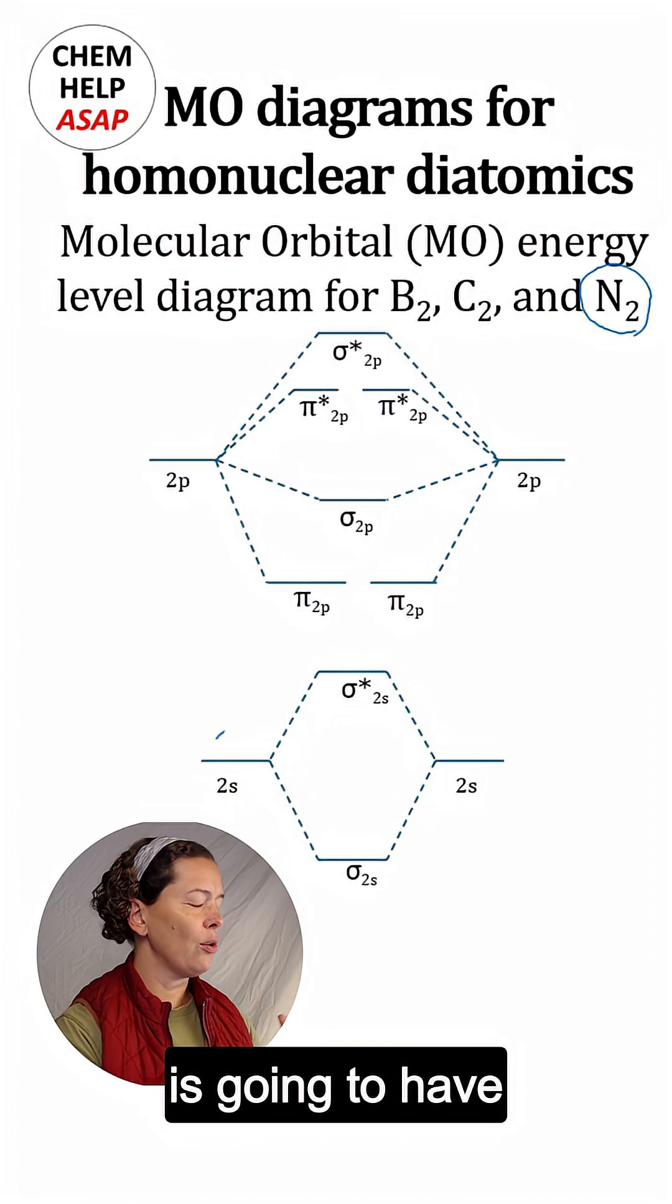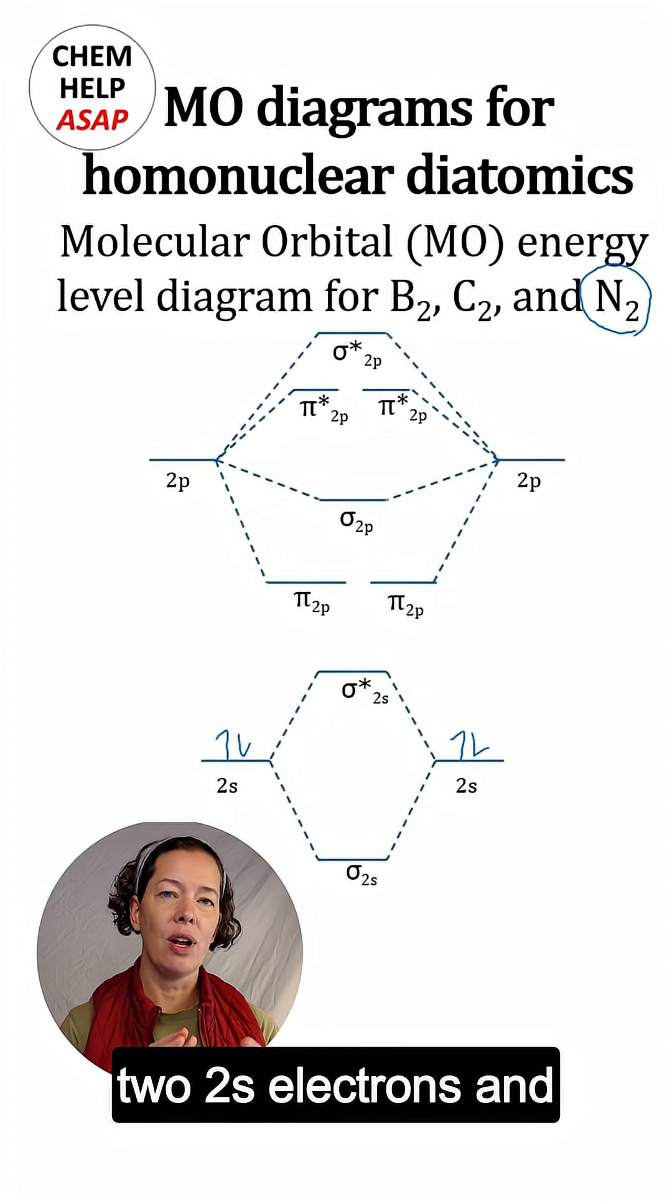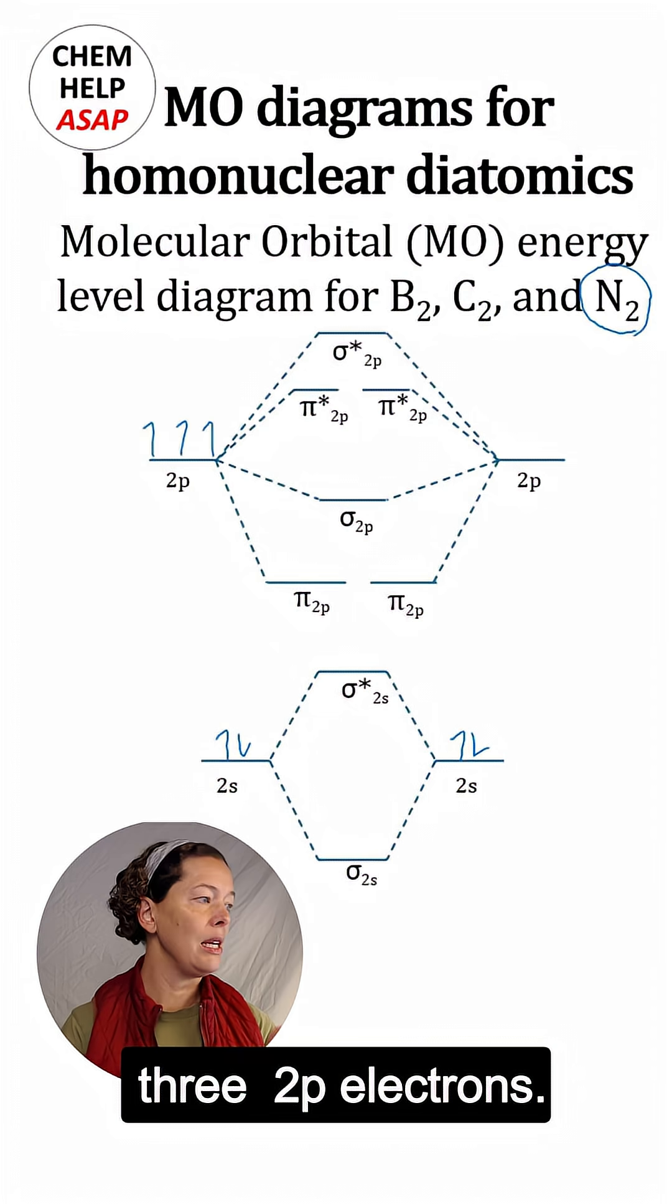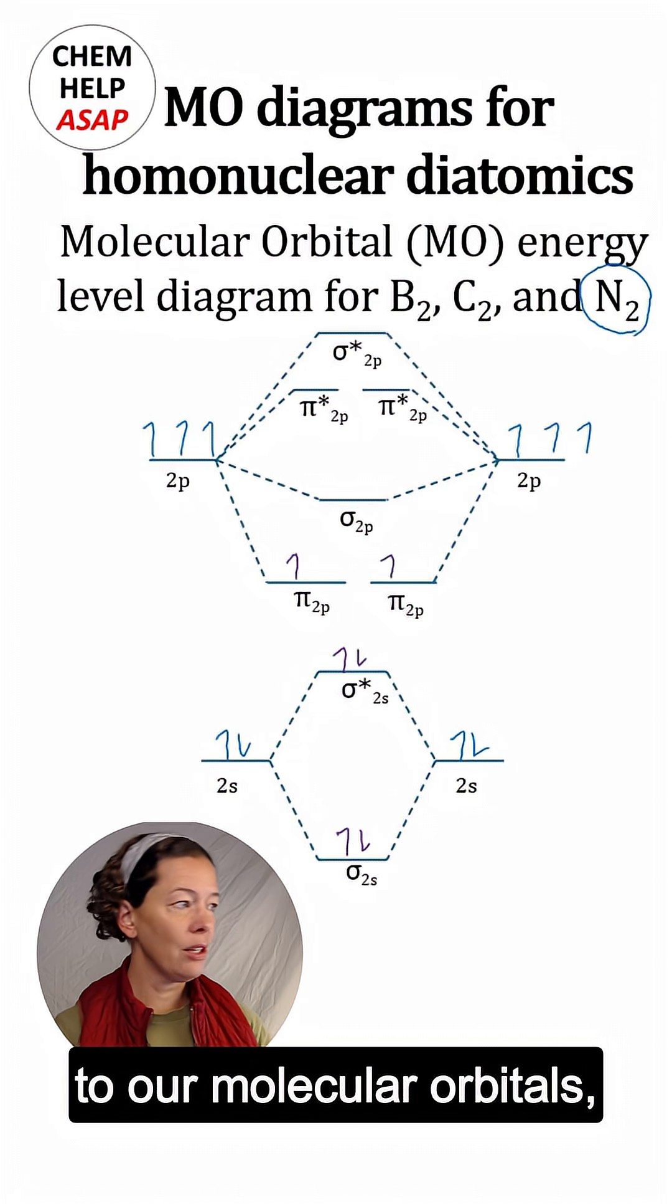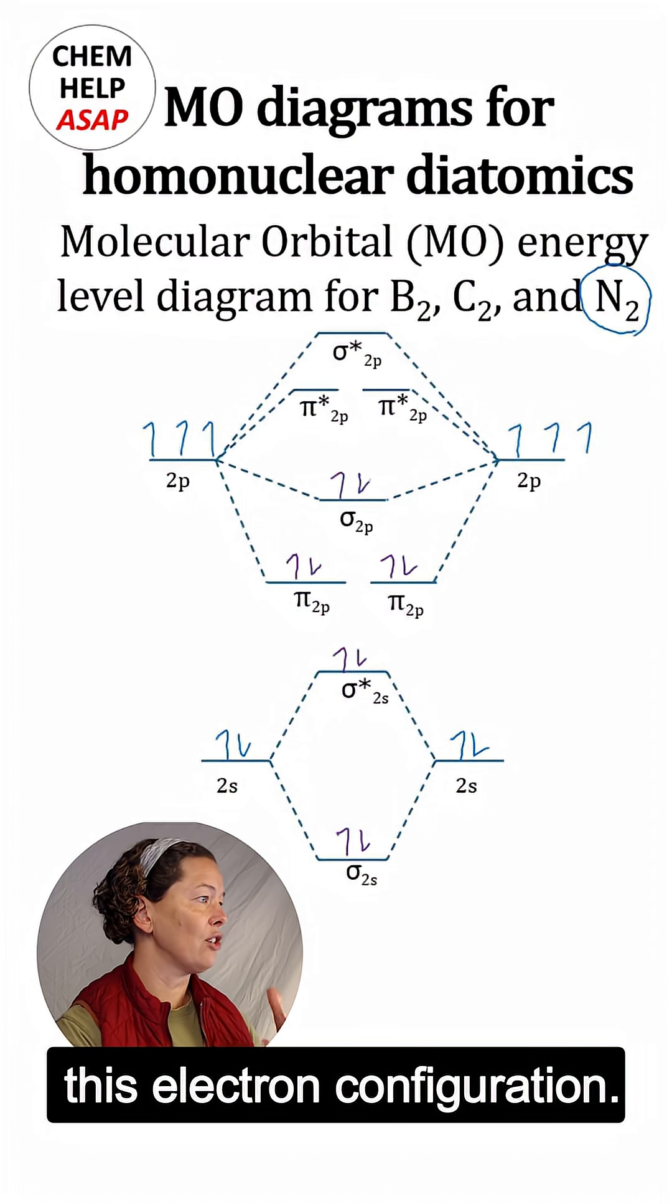Each nitrogen obviously is going to have two 2s electrons and three 2p electrons. So putting those all in from our atomic orbitals to our molecular orbitals, you can see we get this electron configuration.